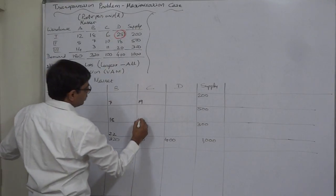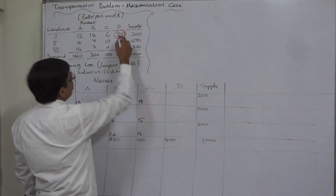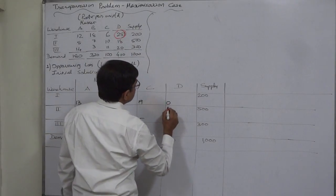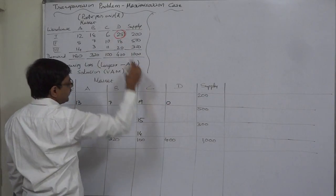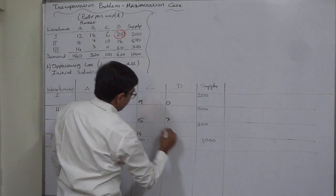25 minus 10 is 15. 25 minus 11 is 14. 25 minus 25 is 0. 25 minus 18 is 7. 25 minus 20 is 5.